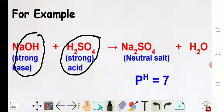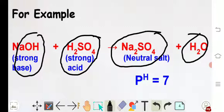So when sodium hydroxide reacts with sulfuric acid then it gives neutral salt that is sodium sulfate and neutral compound like water. So when we try to make the aqueous solution of this sodium sulfate then its pH value will be 7.